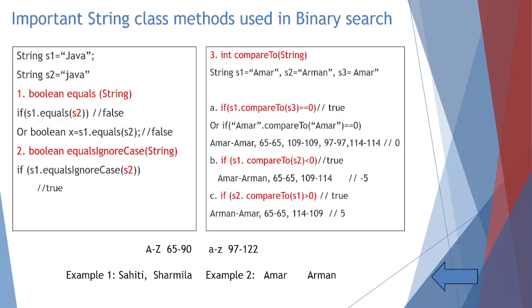And the third part is else, that is greater than 0. But we can check C part, if S2.compareTo(S1) greater than 0. So, S2 is Arman, S1 is Amar, A and A 65 minus 65, R is 114 unicode, M's unicode is 109, 114 minus 109 is greater than 0, 5, 10, doesn't matter, greater than 0. That means, the first string is greater than second string. So, we use this compareTo function in our binary search.